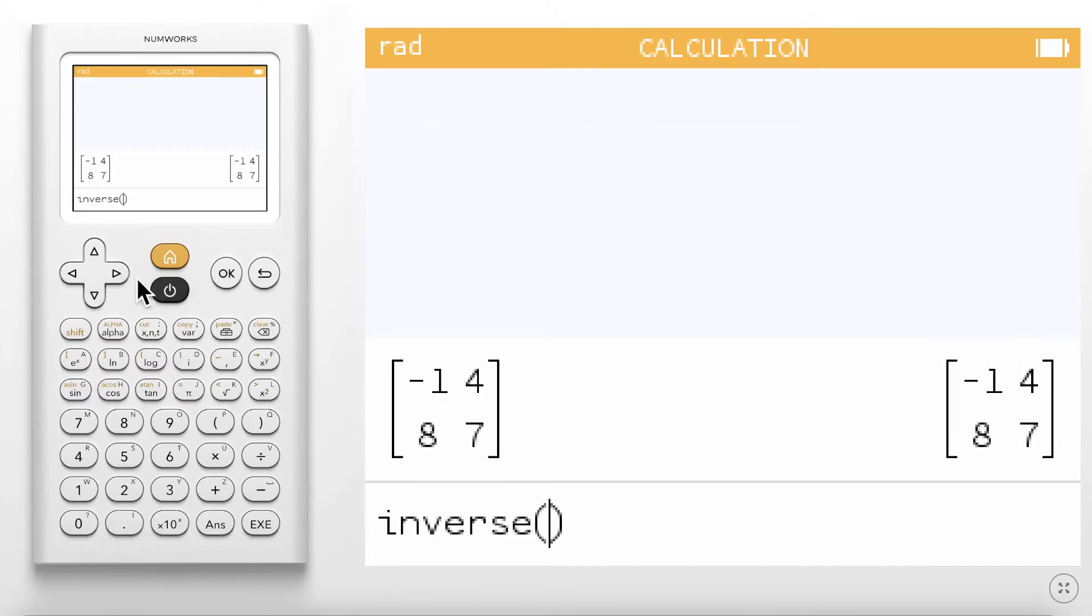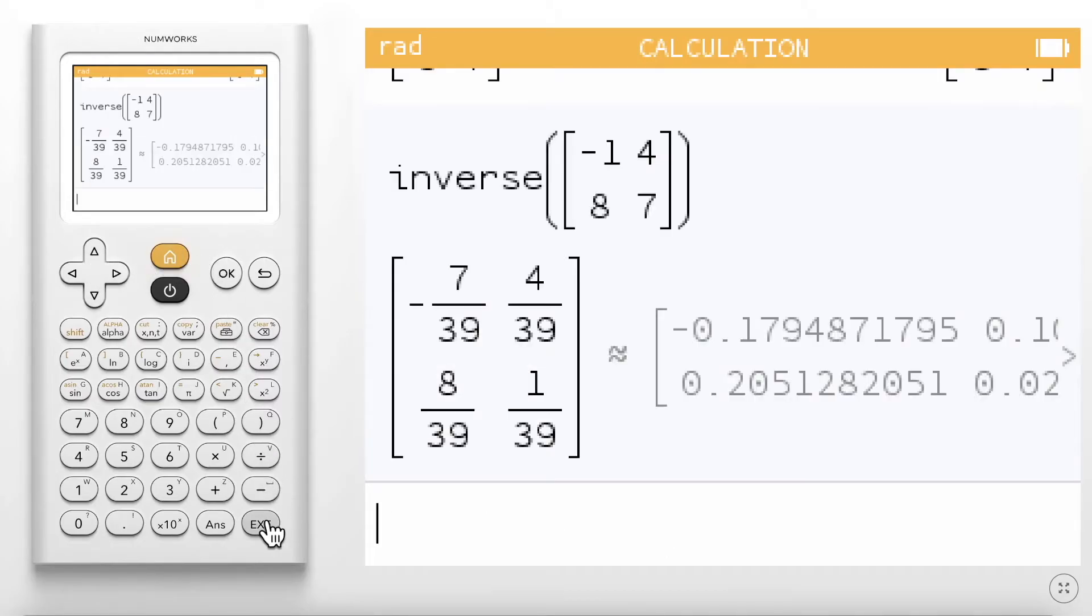Click OK. Navigate into your calculation history to grab the matrix and click OK. Once you hit Enter, you will see the inverse.